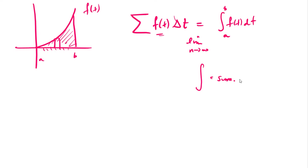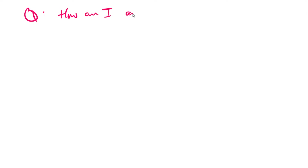The problem was that in order to compute that, it was a ton of work — we had to use both some formulas and limits, and that's irritating. It turns out there is a theorem that tells us how we can undo this, and that theorem is called the Fundamental Theorem of Calculus.